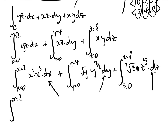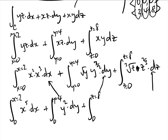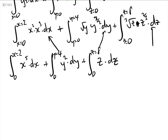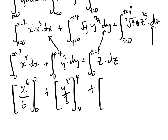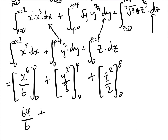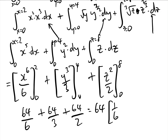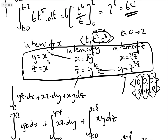Simplifying, we integrate: ∫₀² x⁵ dx + ∫₀⁴ y² dy + ∫₀⁸ z dz. These evaluate to [x⁶/6]₀² + [y³/3]₀⁴ + [z²/2]₀⁸, giving 64/6 + 64/3 + 64/2. Factoring out 64, we get 64 · (1/6 + 1/3 + 1/2) = 64 · 1 = 64, which is exactly the same answer as Method A.